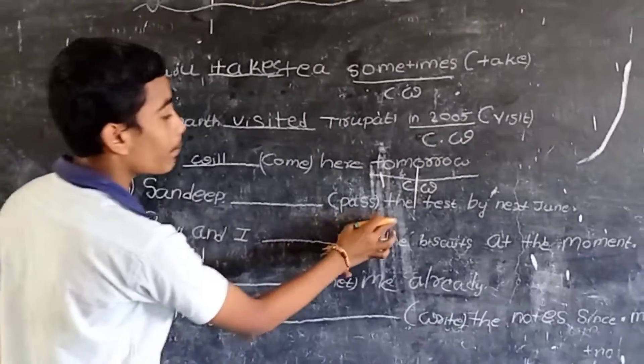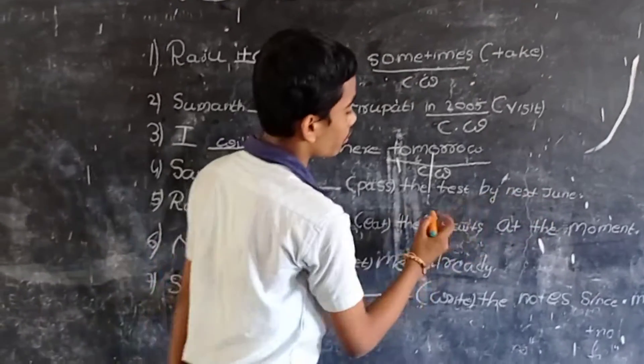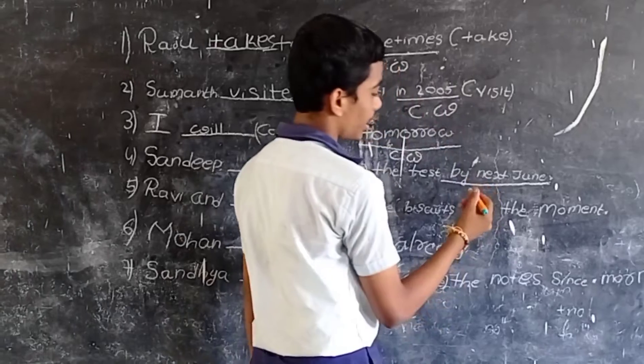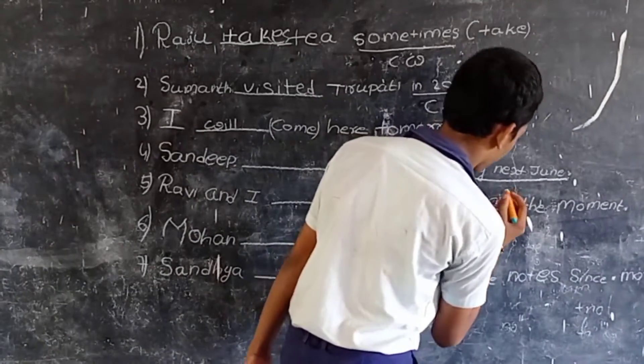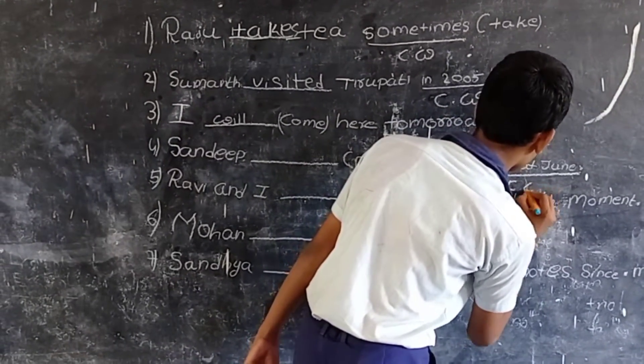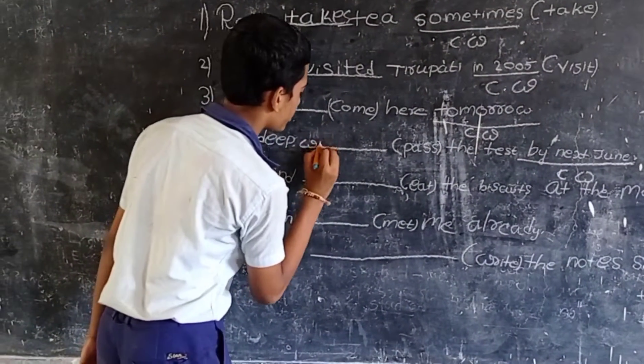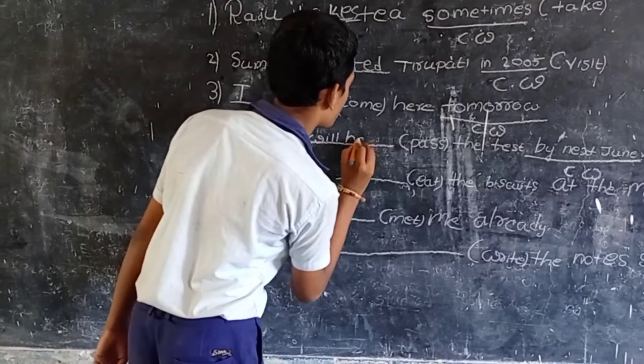Next, fourth example. Sandeep passed the test by next June. Here, the clue word is by next June, which describes the tense of future perfect. Sandeep will have passed the test by next June.